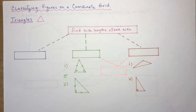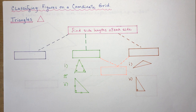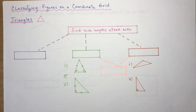Classifying figures on a coordinate grid. Because it's a coordinate grid, you're going to be given coordinates. We're going to be dealing with triangles and quadrilaterals, and this lesson will match up with section 2.4 of the grade 10 Nelson textbook. There's a lot of material here, so we're going to make sure you've got all the key concepts figured out.